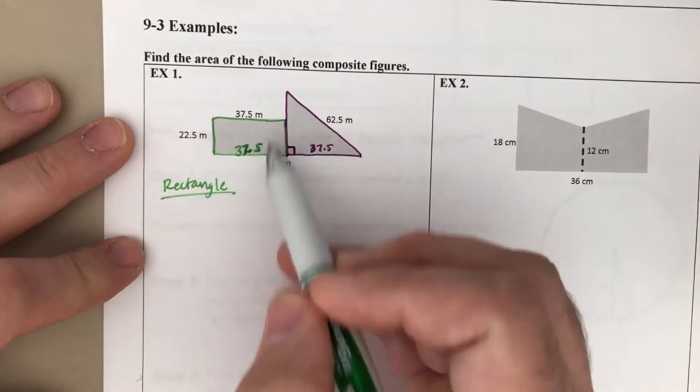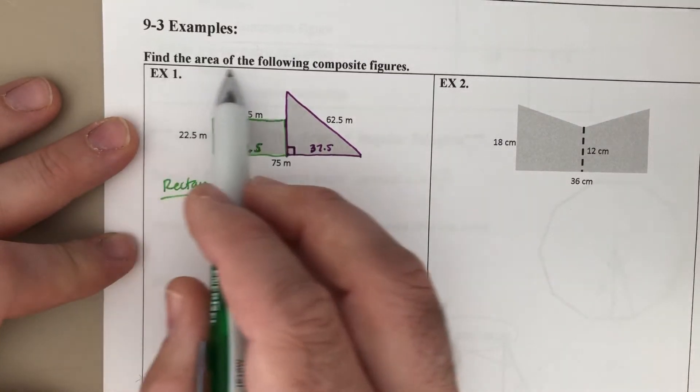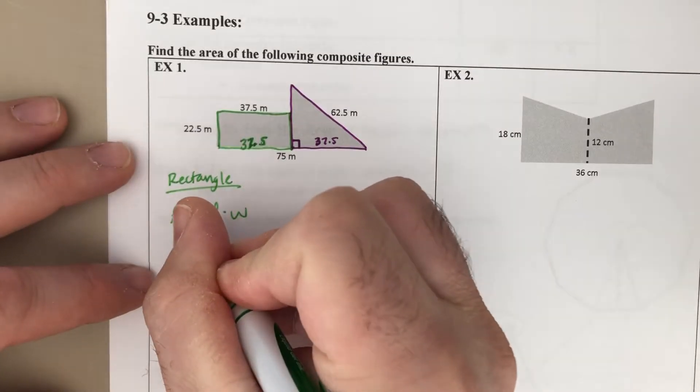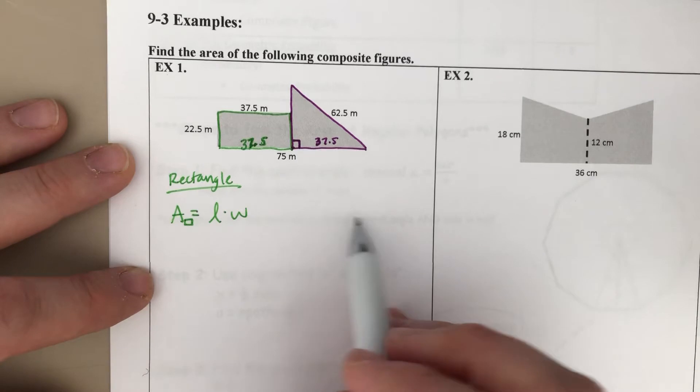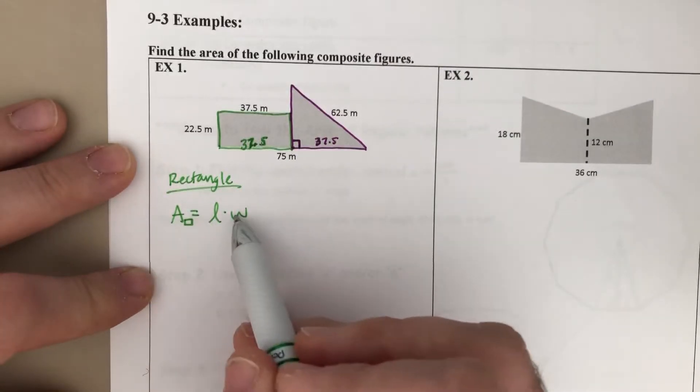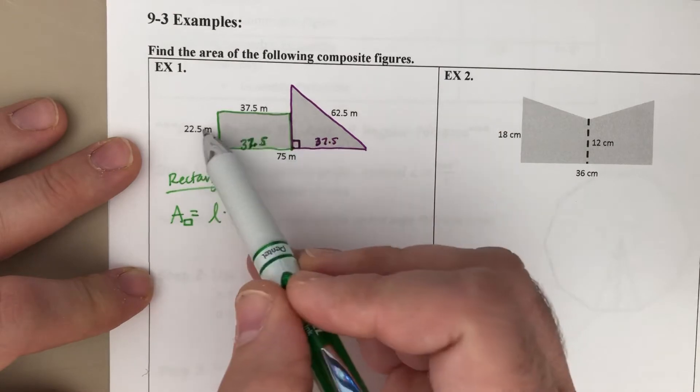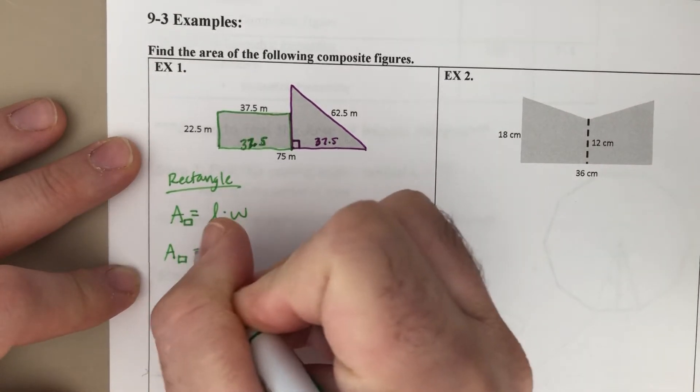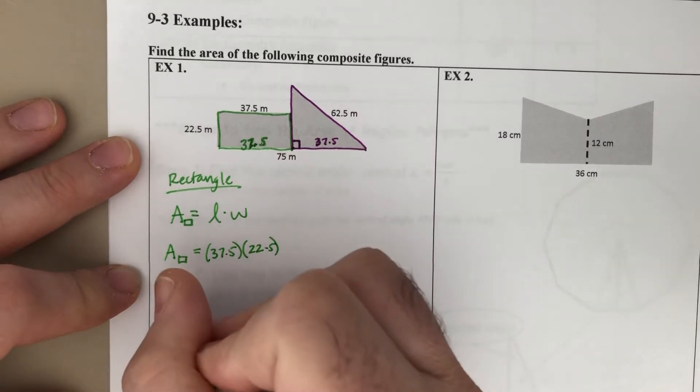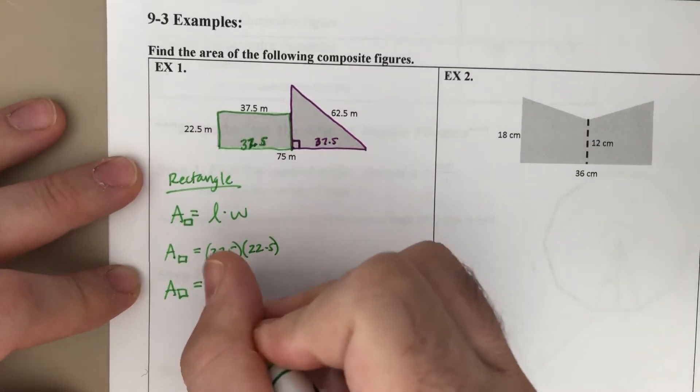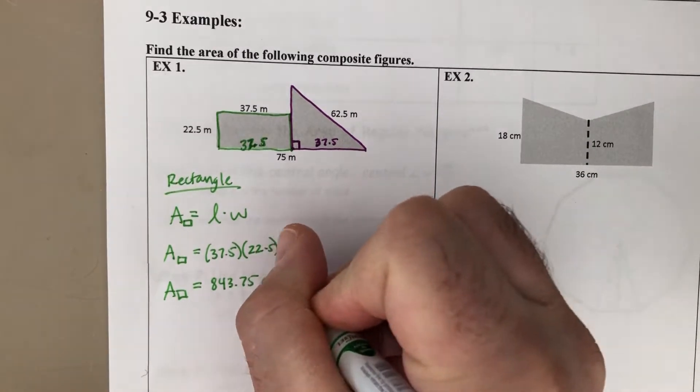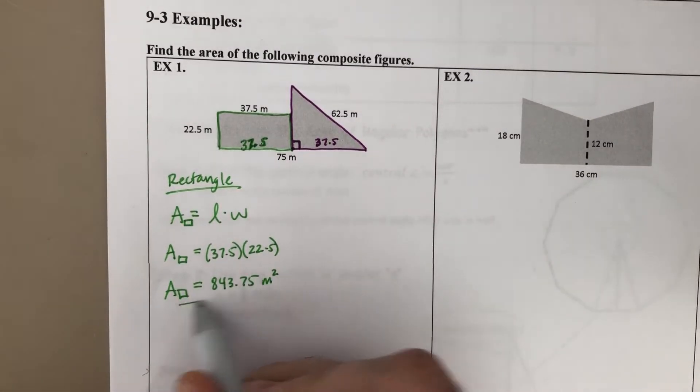So if we're looking at the rectangle first, the area is what we're trying to find here. So the area of the rectangle is length times width. I'm going to put a little rectangle on the area of that, just to differentiate, we're going to see A equals something else for the triangle. So the area of the rectangle is length times width. Which the nice thing now is we have those. There's your width. There's your length. So 37.5 times 22.5. The area of our rectangle is going to be 843.75 square meters. So there's the area of the rectangle. We're going to need that here in a little bit.